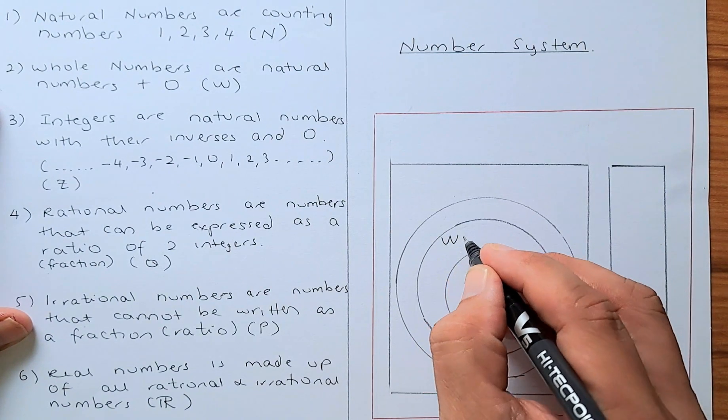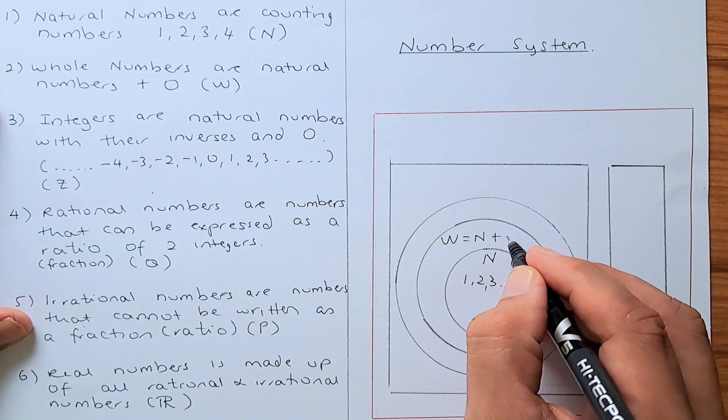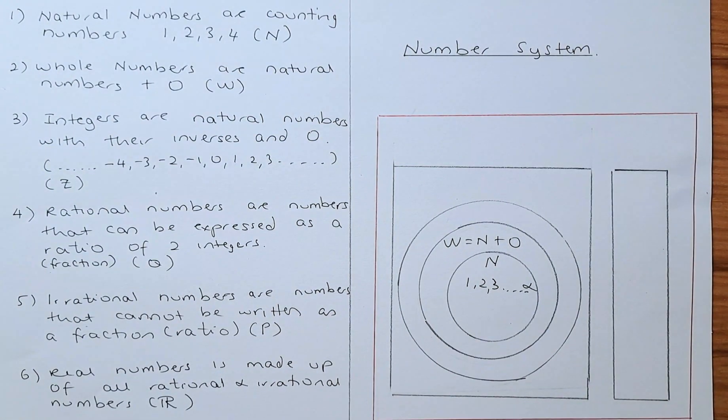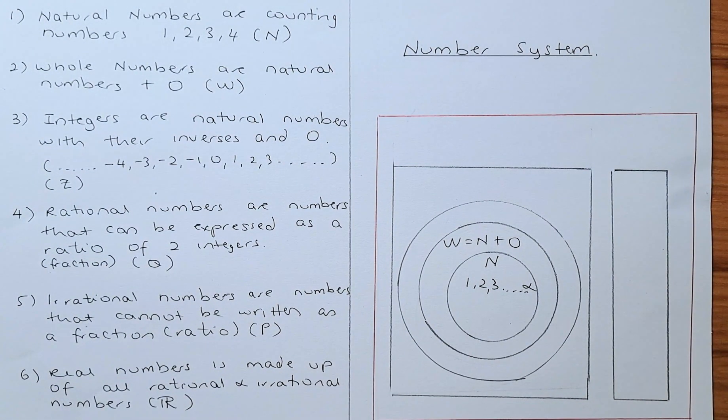W equals natural numbers plus zero. So when you add zero to the natural numbers, it becomes whole numbers.